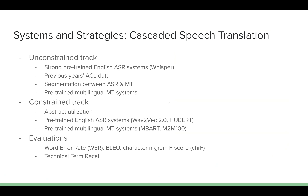The task was further subdivided into two sub-tracks, constrained and unconstrained, with the former imposing certain limits on the data and pretrained models available to us. We therefore developed separate systems for each track while employing similar techniques to address the previously mentioned unique characteristics of the dataset. We focused primarily on cascaded speech translation approaches. In addition to the standard evaluation metrics — word error rate for ASR, BLEU, and CHRF for machine translation — we also came up with our own evaluation metric, technical term recall, in order to assess our system's performance in this highly specific technical domain.